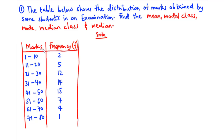Here we have the mark interval and the frequency — that is, the number of times numbers from a particular interval occur. For instance, between 1 and 10 we have 2 occurrences, between 21 and 30 we have 12 occurrences, between 51 and 60 we have 7 occurrences, and between 71 and 80 we have only 1 occurrence.